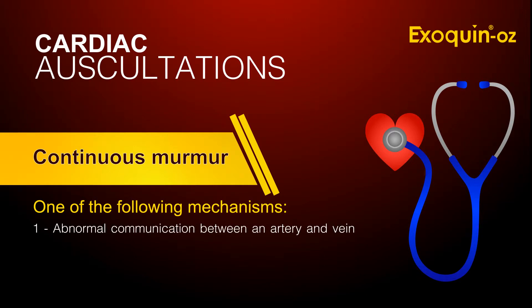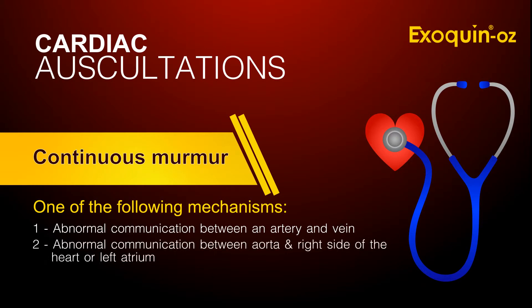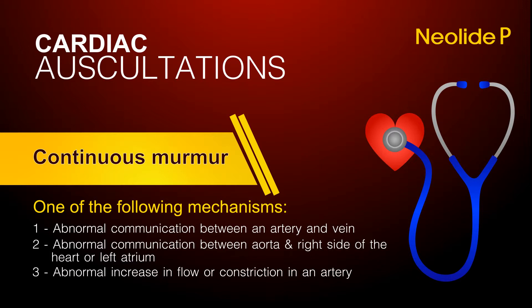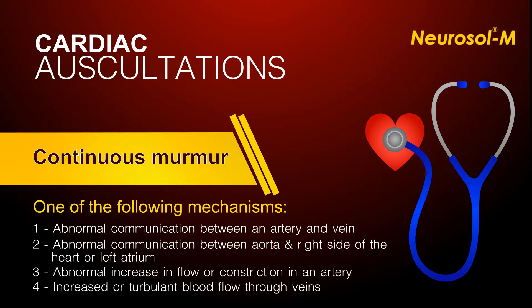One: an abnormal communication between an artery and vein. Two: an abnormal communication between the aorta and the right side of the heart or with the left atrium. Three: an abnormal increase in flow or constriction in an artery. And four: increased or turbulent blood flow through veins.